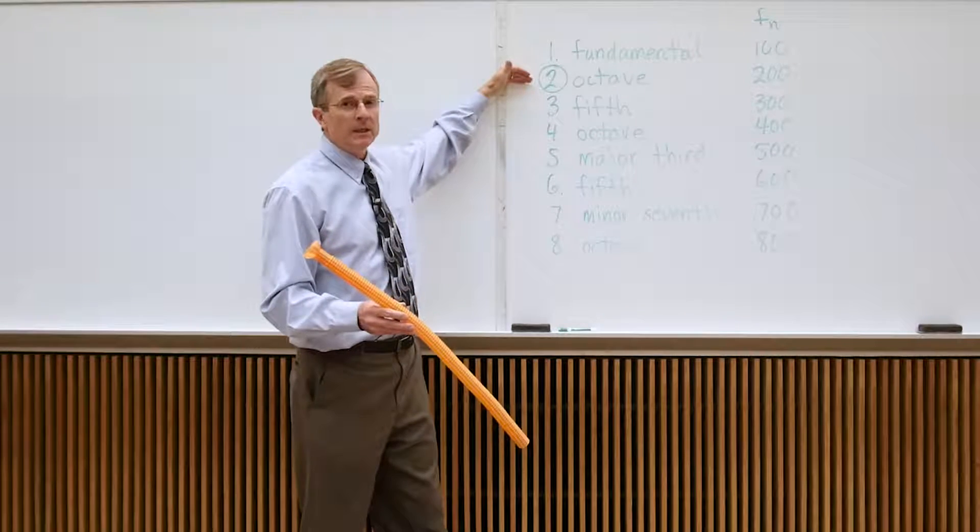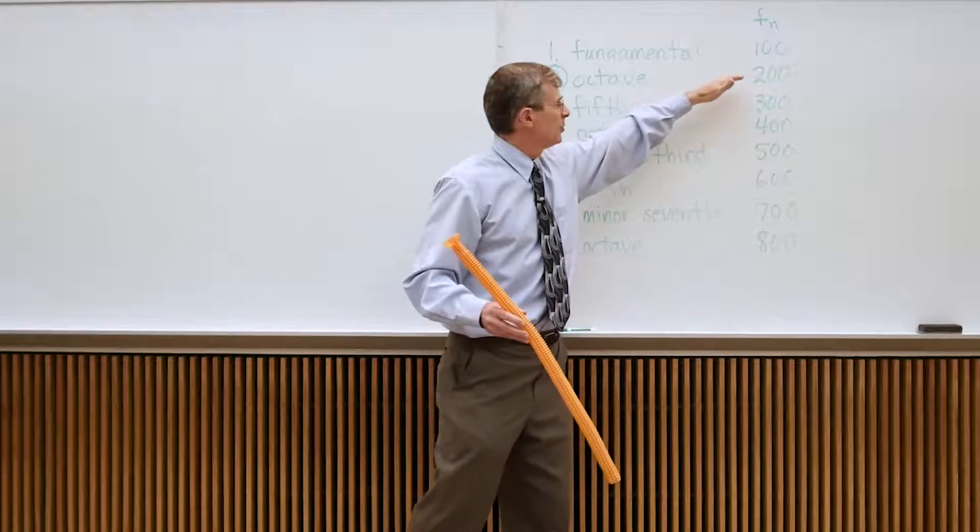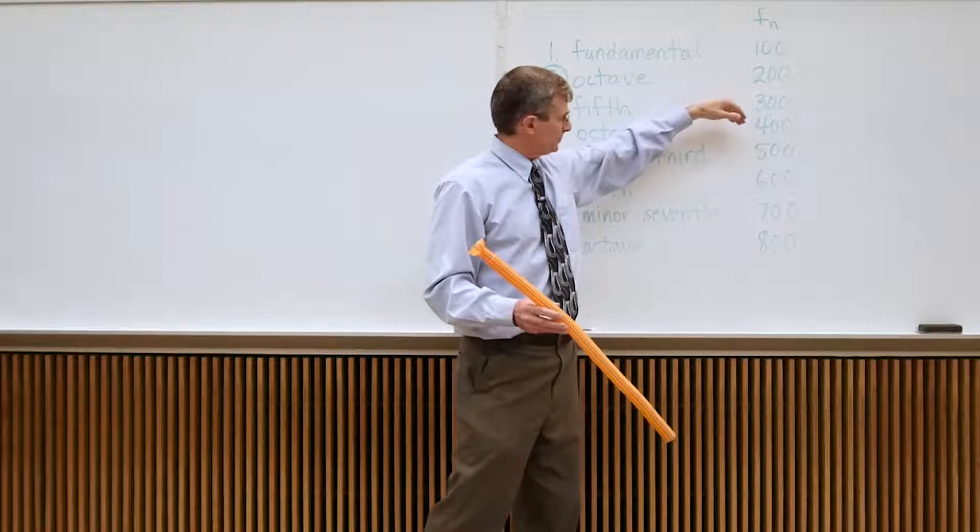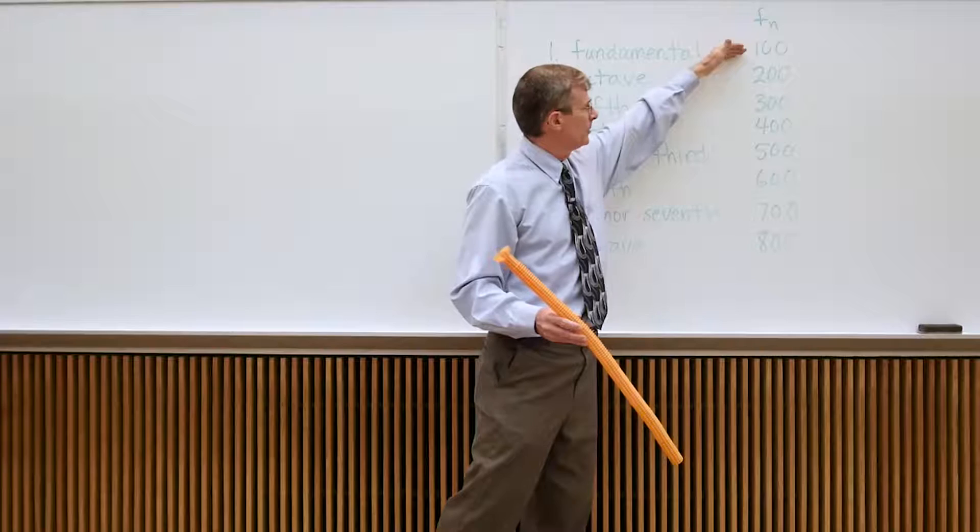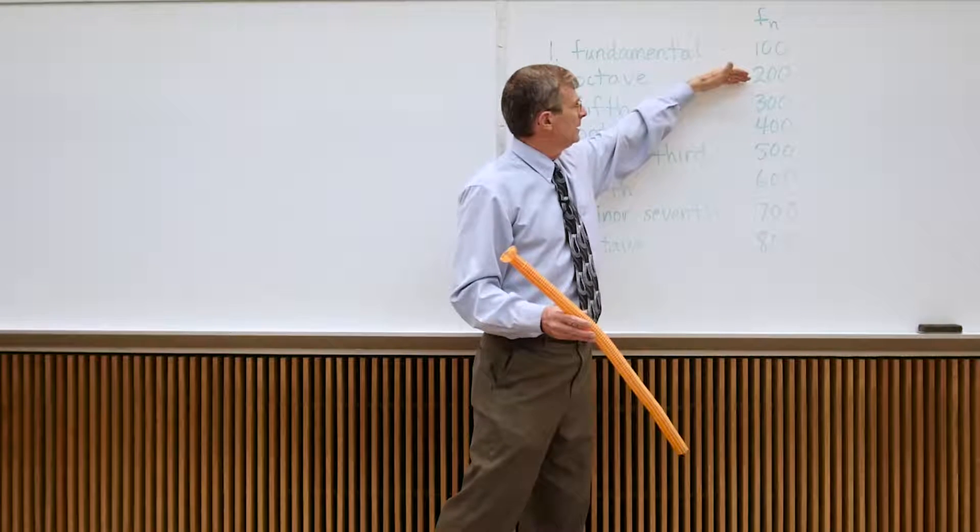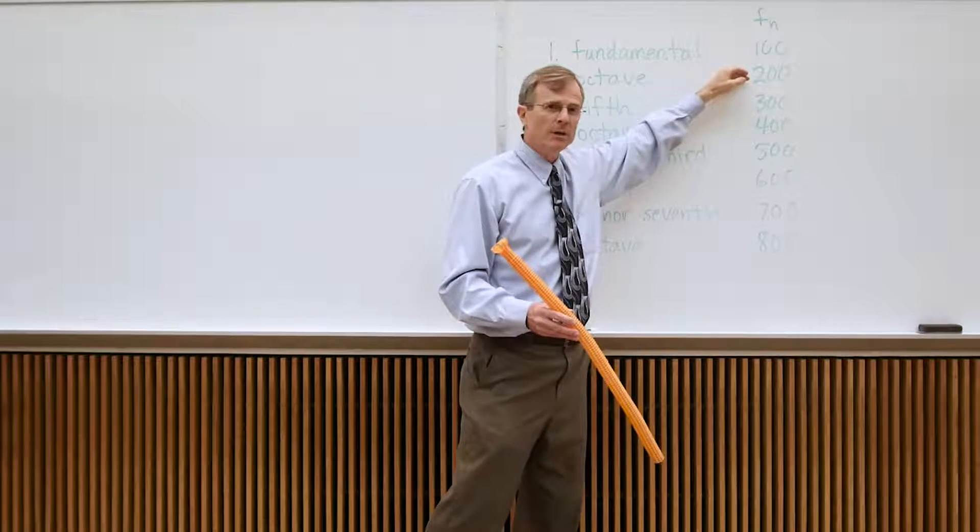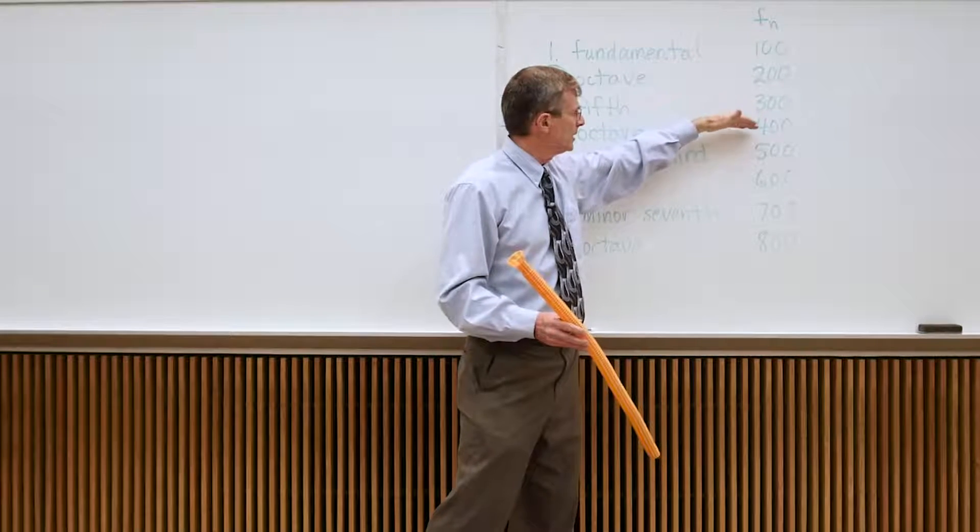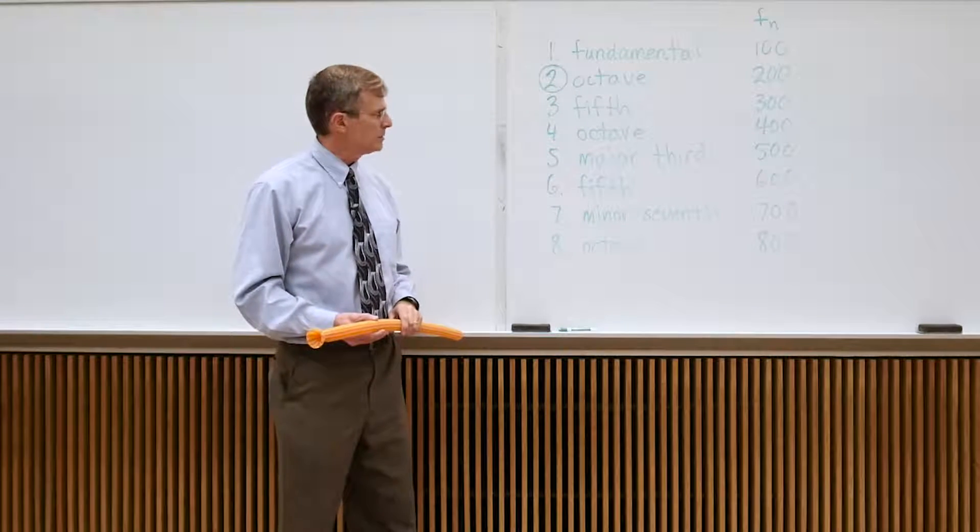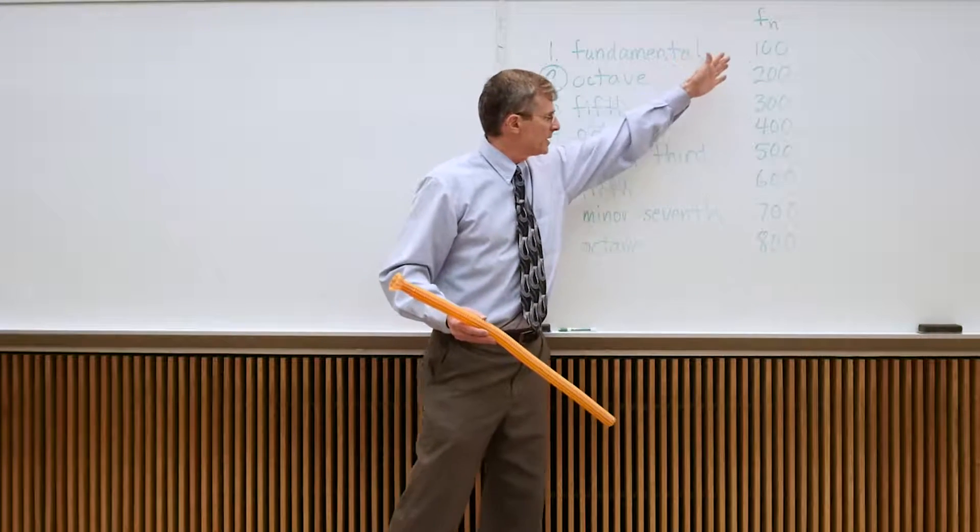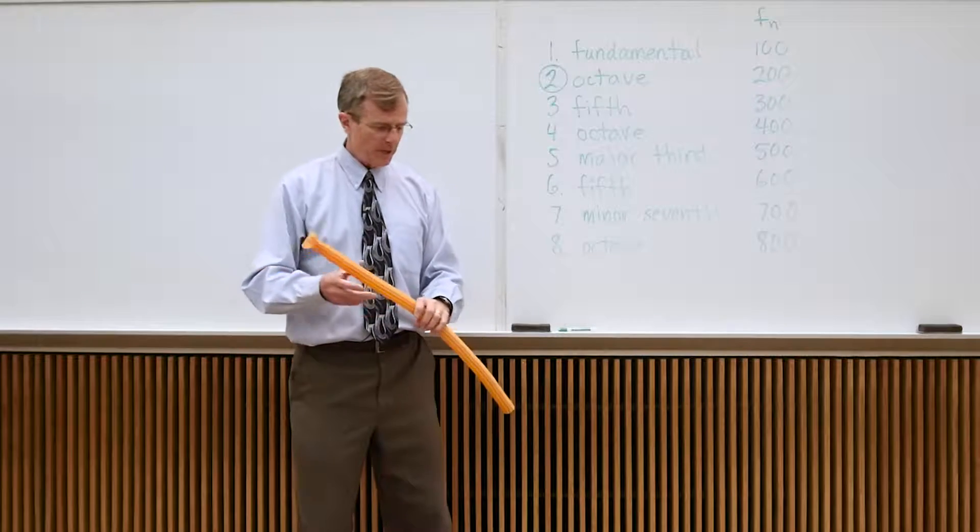So the first one that we'll be able to hear is one octave up from the fundamental. It'll be twice the frequency of the fundamental. So if the fundamental mode were 100 Hz, 100 cycles per second, then the second harmonic, or the first overtone, will be 200 Hz, then 300, then 400, then 500, then 600 as you proceed through the various modes. This is called the harmonic series, and we'll be demonstrating how that sounds using this pipe.